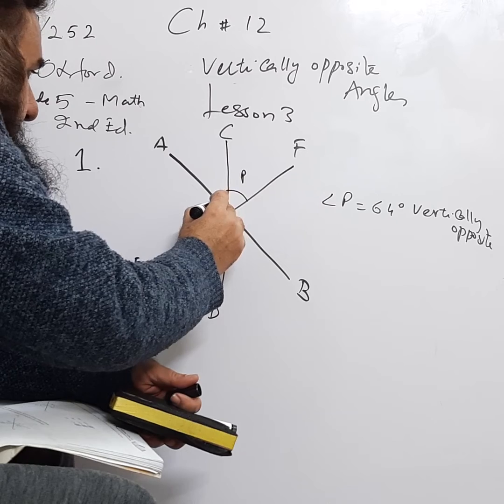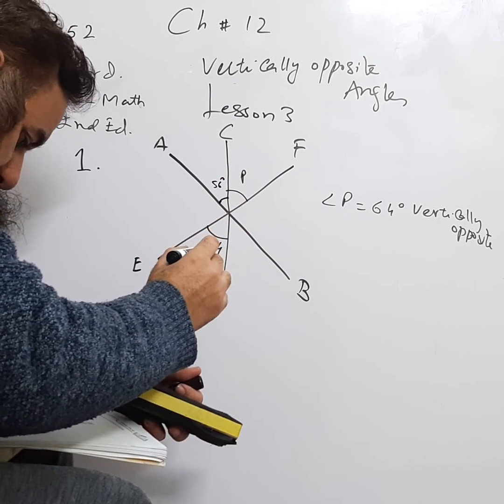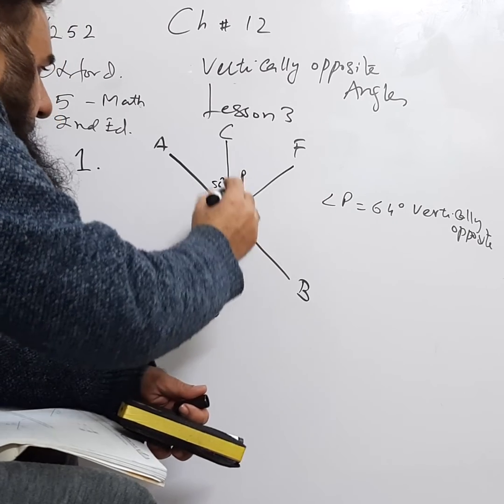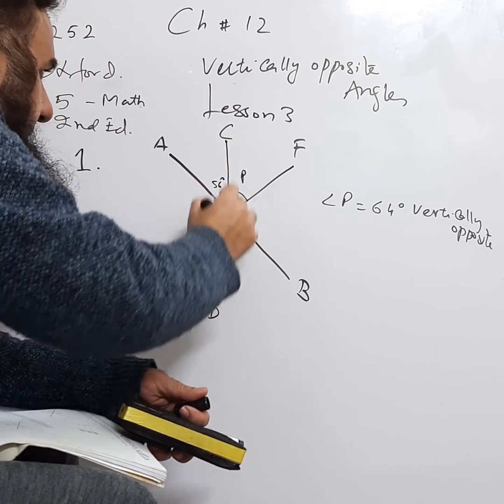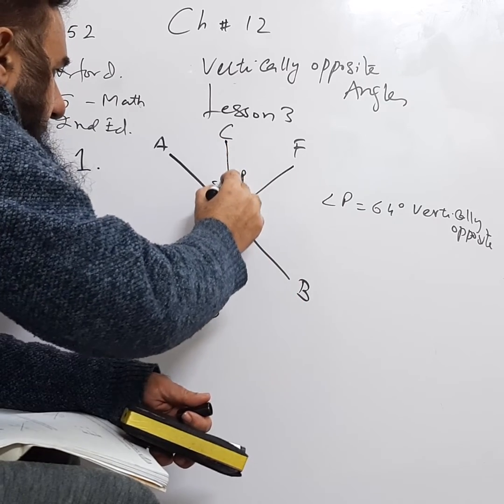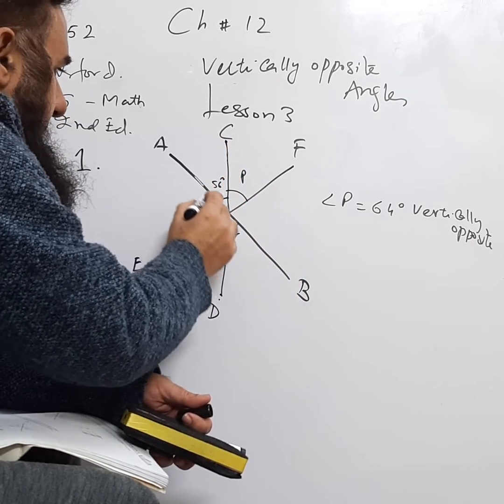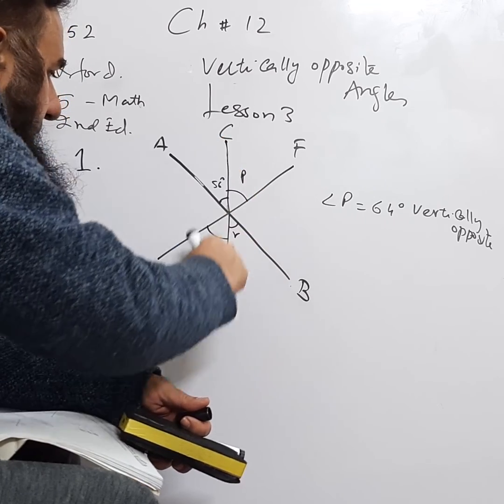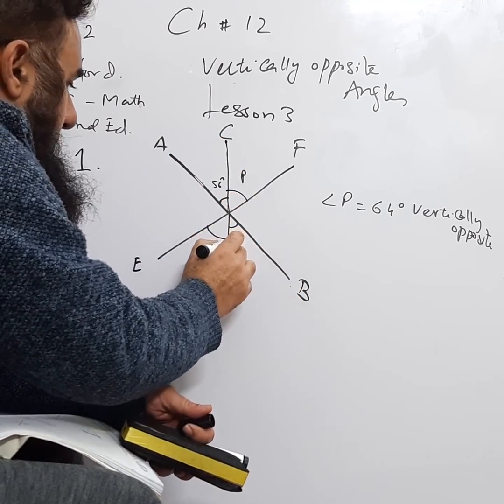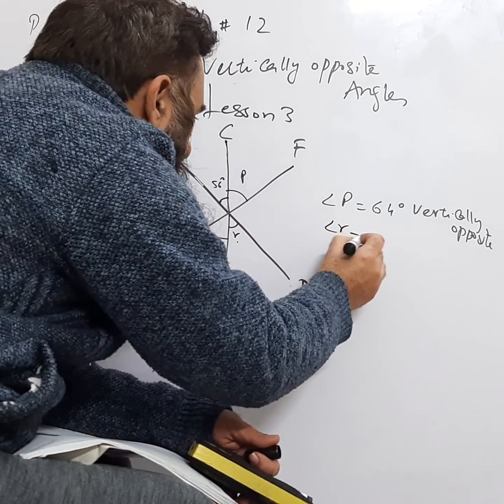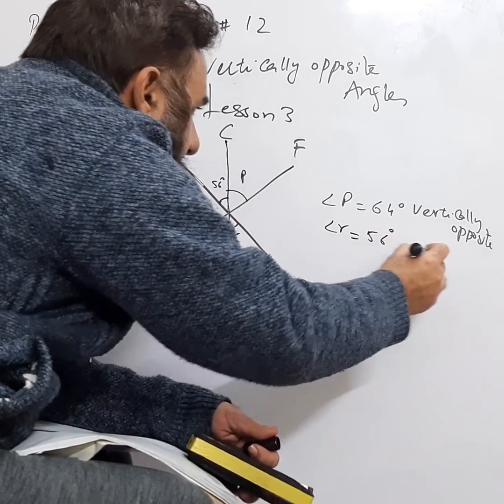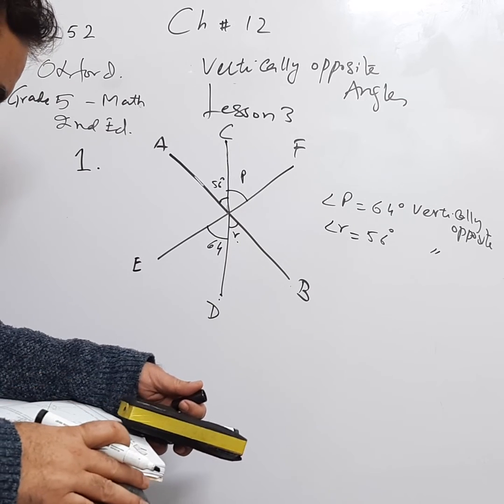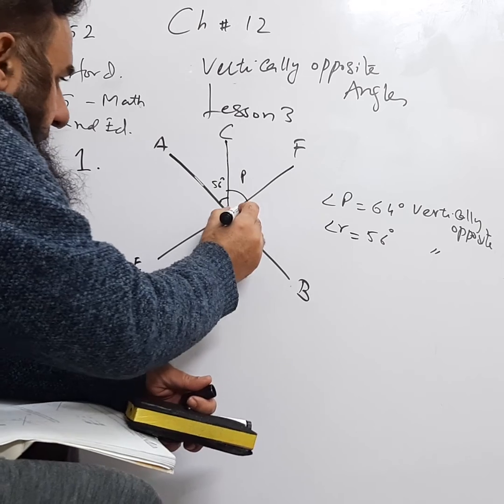Then they say that this one is 56 and this one is R. Here we see CD and AB, this CD and AB. These are also two straight lines and they are making an X here and here. 56 is opposite to R, so angle R is equal to 56. Why? Because these are vertically opposite angles.